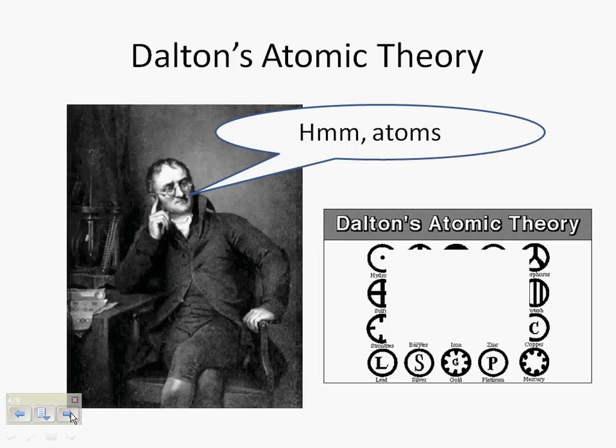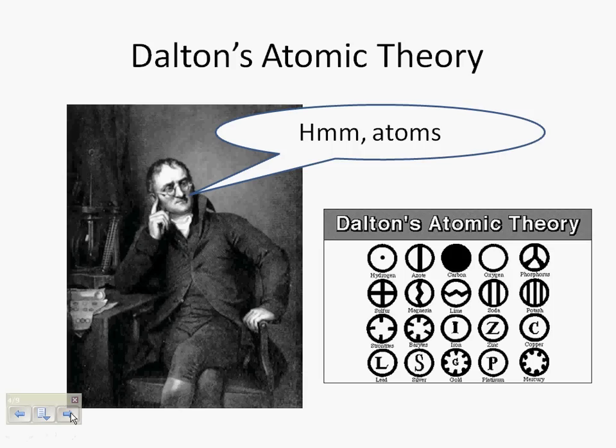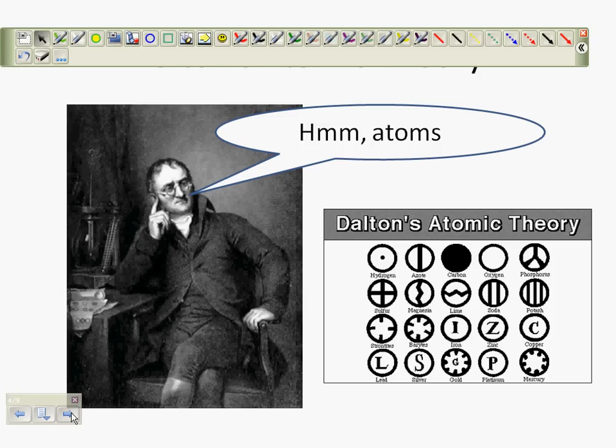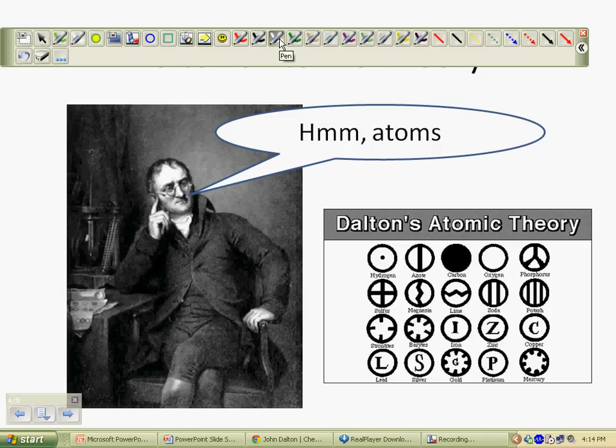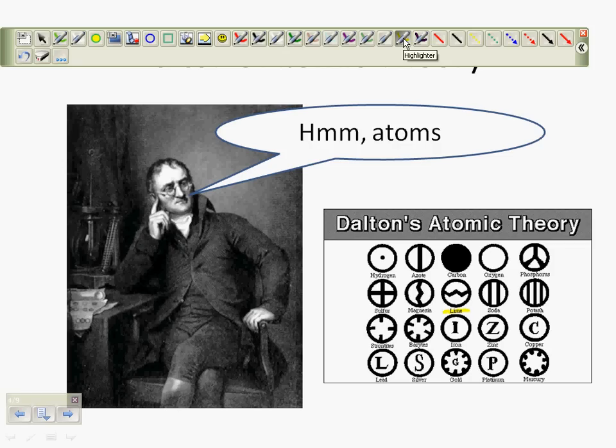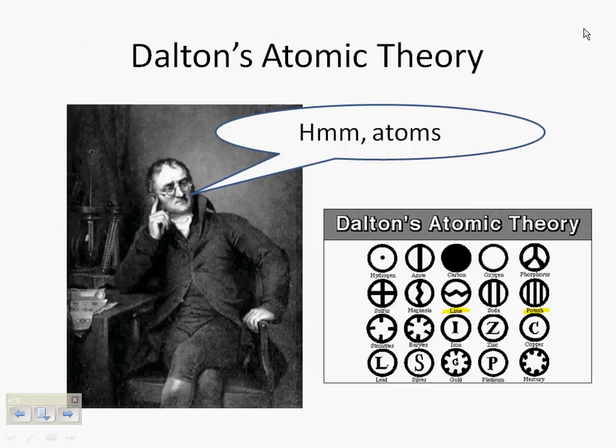He was one of the first to give us symbols. So we have these circles with either letters or different figures in them to identify different elements. But do notice that some of these are not elements, such as lime and potash, but most of the others are elements.